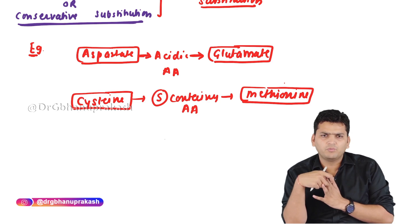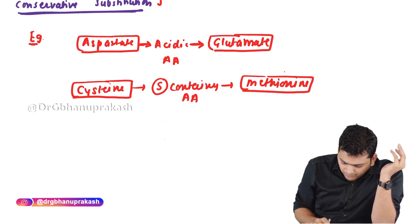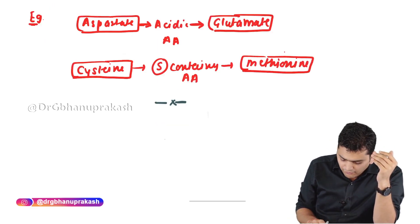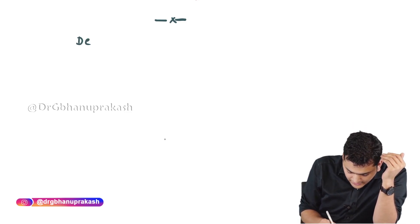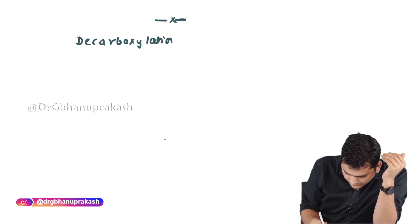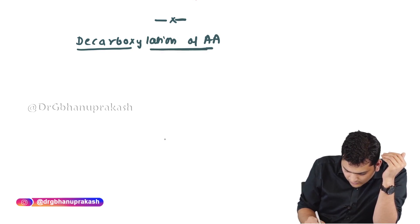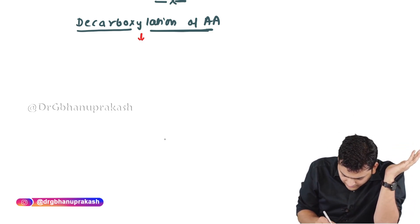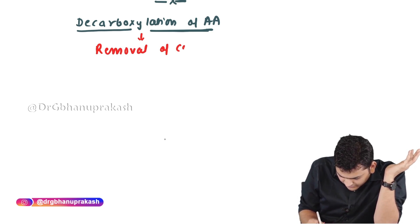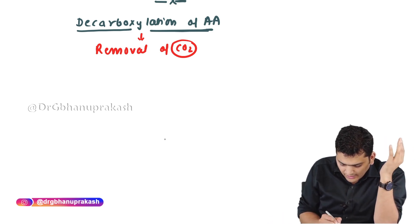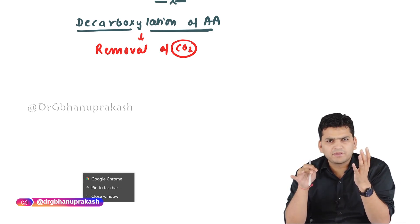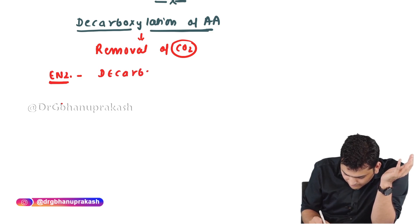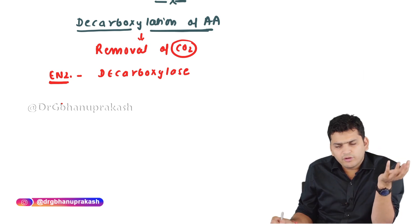This is the general part of the classification and basic definition of amino acids. Now we start with the reaction part. The first reaction in biochemistry is decarboxylation of amino acids. Decarboxylation, as the name says, means removal of carbon dioxide. The enzyme used is decarboxylase.